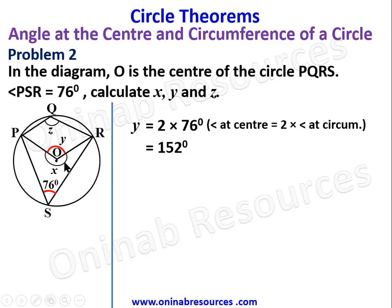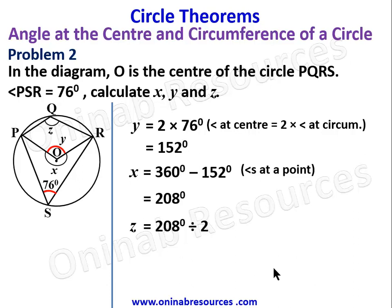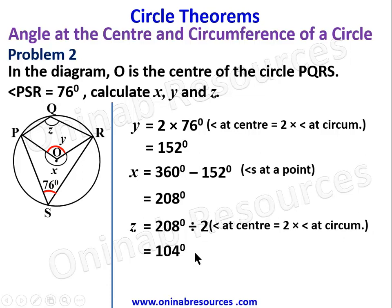Since we have y, we use the principle that angles at a point sum to 360 degrees. So x equals 360 degrees minus 152 degrees, which gives 208 degrees. X is connected to z with respect to angle at center and angle at circumference, therefore z equals 208 divided by 2 — angle at center is twice angle at circumference — giving 104 degrees. Problem two is complete.